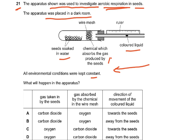Why? Because we are studying aerobic respiration. The oxygen in the air is taken in by the seeds, but the carbon dioxide being produced enters the chemical. This creates a pressure difference, so the colored liquid moves towards the test tube or towards the seeds. The answer is C: oxygen, carbon dioxide, towards the seeds. You must know the reason why — if this chemical was not present, there would be no movement of the colored liquid, because six oxygen is taken up and six carbon dioxide is produced, so no pressure difference is created.